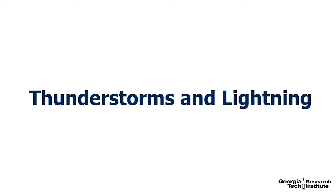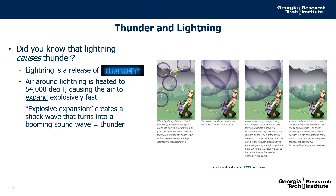Did you ever wonder what causes the thunder and lightning in a thunderstorm? Lightning actually causes the thunder. Lightning is a release of electricity between the cloud and the ground. This electricity in the lightning heats up the air to over 50,000 degrees, and that's hot enough to make the air explode.